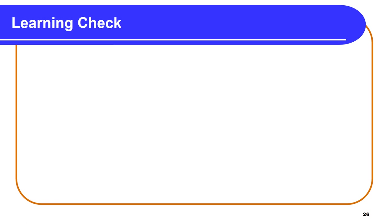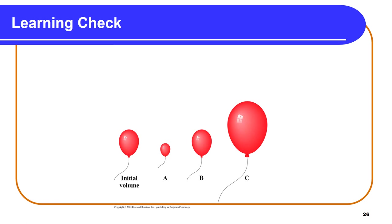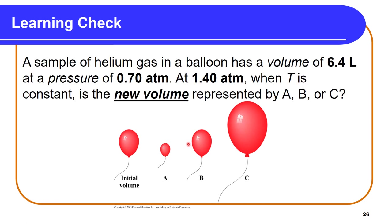Learning check 3: A sample of helium gas in a balloon has a volume of 6.4 liters at 0.70 atmospheres. At 1.40 atmospheres with constant temperature, is the new volume represented by balloon A, balloon B, or balloon C?